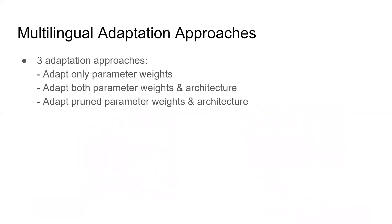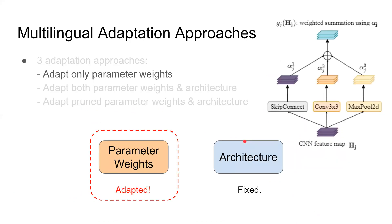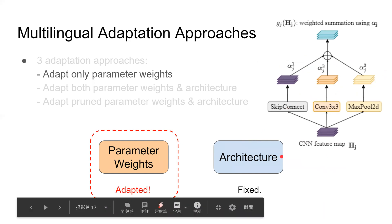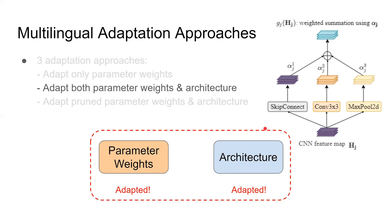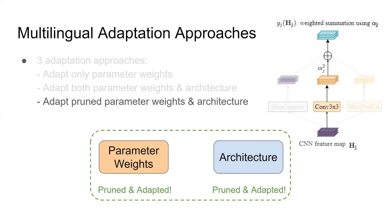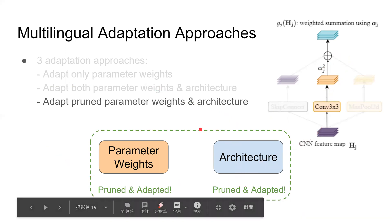As for fine-tuning, we experiment with three adaptation approaches in multilingual ASR. The first one, we adapt only parameter weights. The continuous variables alpha from pre-training are fixed. That is, the network architecture is learned from the source languages, and with the learned architecture, its network parameters are learned from the target language. In the second one, we adapt both parameter weights and architecture. Both alpha and parameter weights in the transformations keep being trained. That is, both the network architecture and network parameters learned from source languages are further fine-tuned on the target language. And the third one, the architecture learned from the source languages is pruned by removing all transformations but the top few ones with the highest alpha values in each edge. Then the pruned alpha keeps being fine-tuned along with the remaining parameter weights.